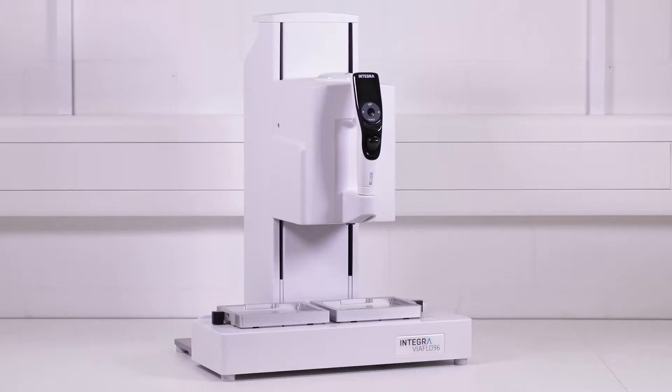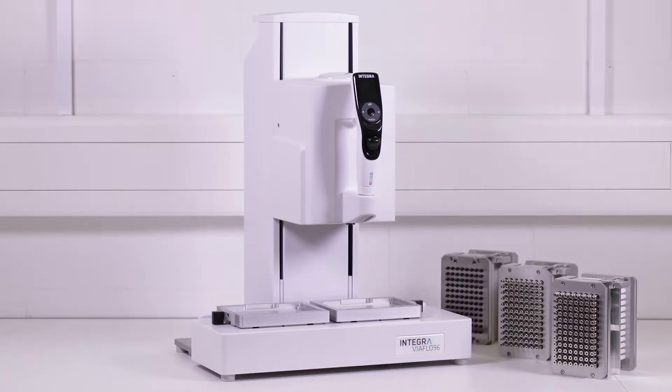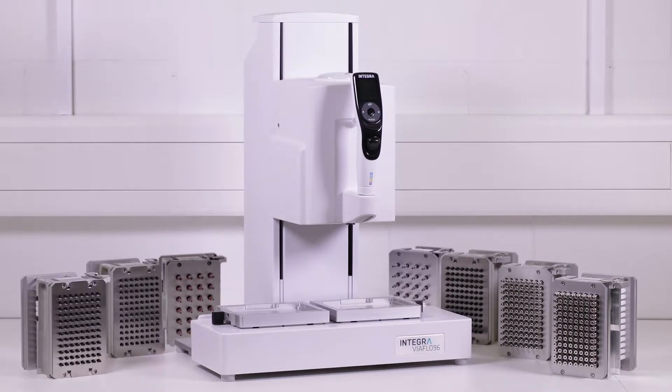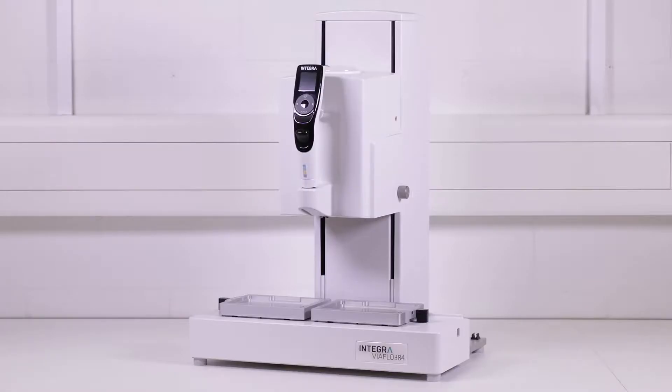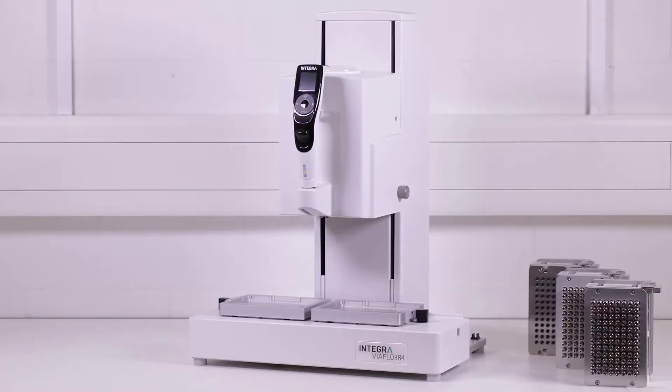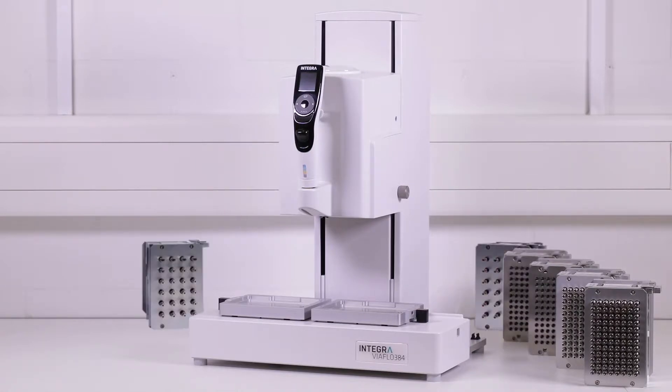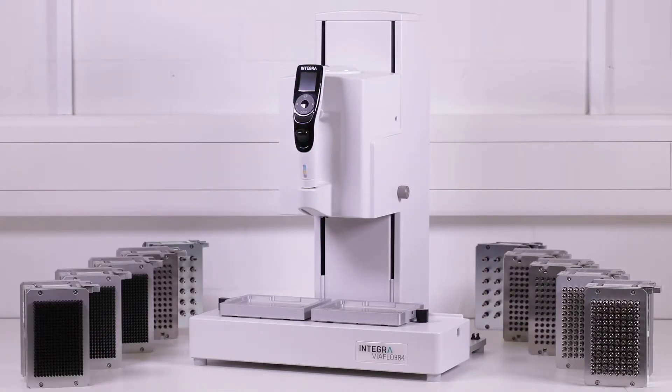Two different base units are available. The VIAFLOW 96 offers 24 and 96 channel heads in a variety of volume ranges. The VIAFLOW 384 accommodates 24, 96 and 384 channel heads, offering even higher throughput and possibilities.